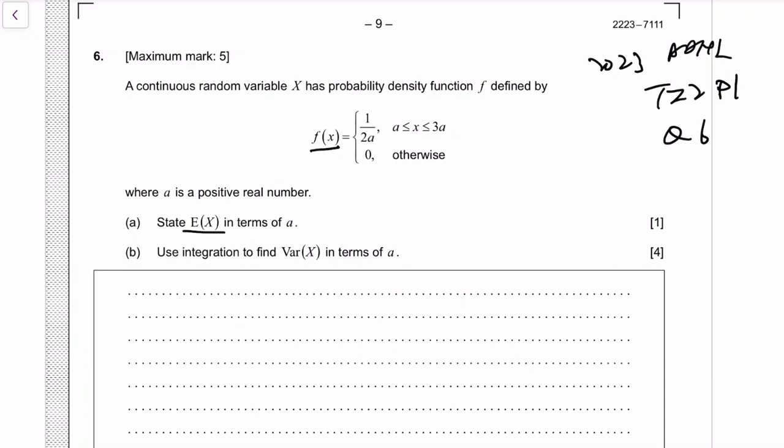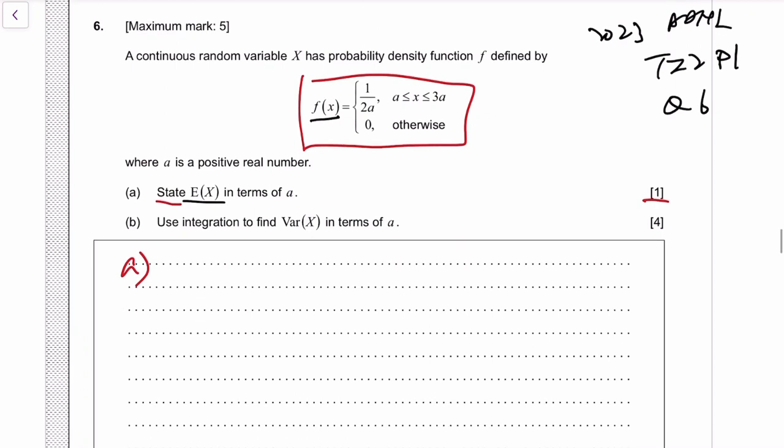Now, if you know what this distribution is, then it's possible you can just know the mean. That's why it's one mark. But this distribution is not in the syllabus, so I'm guessing not that many of you know this.